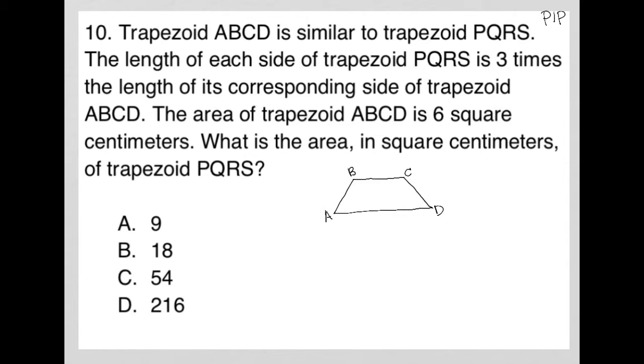We're told it is similar to trapezoid PQRS. So I'll just do a similar symbol here and draw another trapezoid, make it a little bit smaller, and call this P, Q, R, and S.